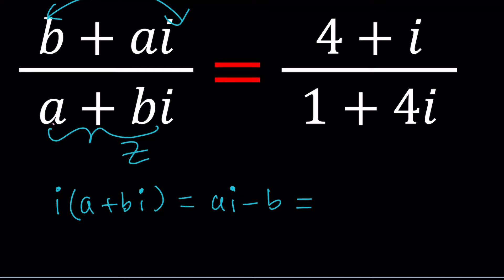Okay, great. So this gave us negative B plus A I. Kind of close but B has a minus sign. Can we fix it? Maybe take the opposite?